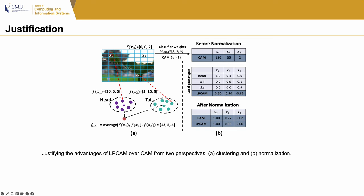From the perspective of normalization: due to the biased classifier weights, the CAM values may be skewed — for example, X1 is 100, X2 is 35, and X3 is 2. It is biased toward X1, and after normalization there is no change to this bias, resulting in a large gap between X1 and X2. In our prototype-based method, the prototype 'head' has the highest similarity to region X1, and the prototype 'tail' has the highest similarity to X2. After normalization, they become 1 and 0.83 — only a small gap between the discriminative region X1 and non-discriminative region X2.